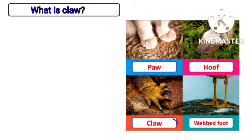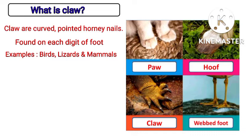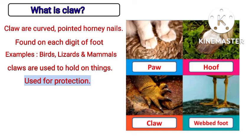What is a claw? Claws are curved, pointed horny nails on each digit or foot of birds, lizards, and some mammals. Claws are used to hold on to things and for protection. Hawks, eagles, and owls, which are commonly called hunting birds, have claws.